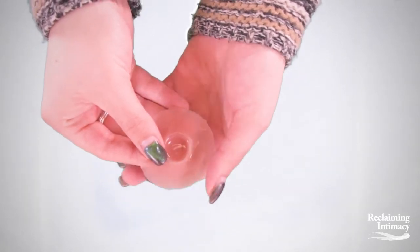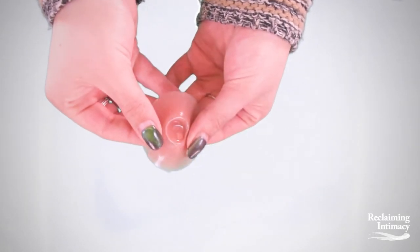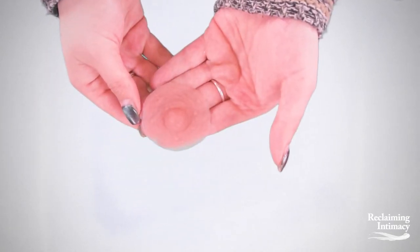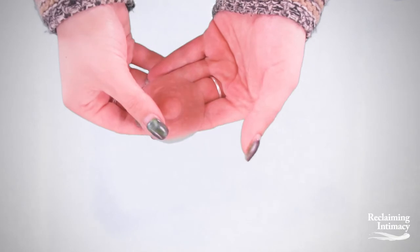The silicone gel is specially designed to look like real skin with no shine. Reclaiming Intimacy's Premier Collection nipples are available in three different sizes: small, medium, and large, as well as three different colors.